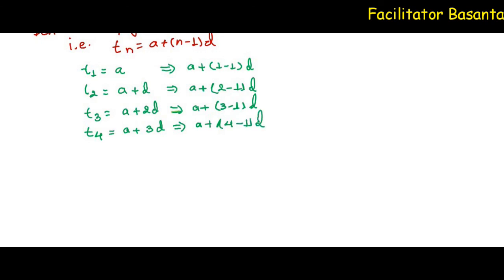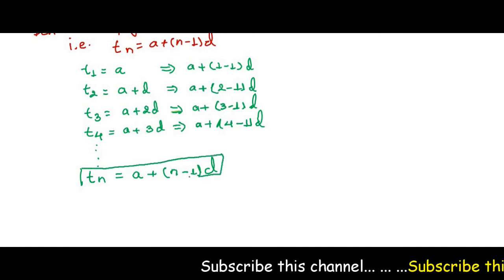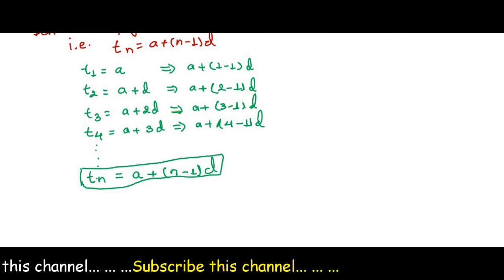We can write a here, plus sign. See here, for t1 it's 1, for t2 it's 2, for t3 it's 3, for t4 it's 4. If there is tn, then it will be n, and minus 1 is the same, likewise d. In this way we can derive the general term of arithmetic progression.